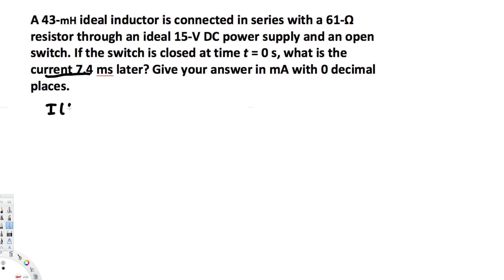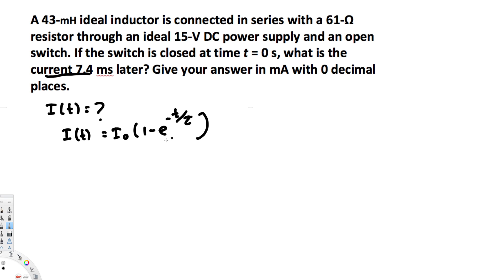We are trying to find i of t. To find i of t, we can use this formula: i of t equals I-naught times one minus e to the power of negative t over tau. I-naught is the initial current, t is time, and tau represents the time constant.